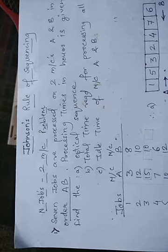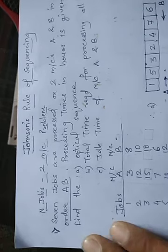Today we will start with the first type: n jobs, two machine problem. The algorithm we are going to use is Johnson's Algorithm, also called Johnson's Rule of Sequencing. I'll be solving a numerical on method number one — the n jobs, two machine problem.